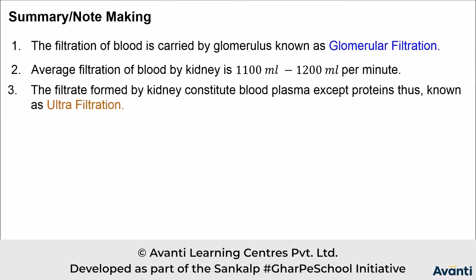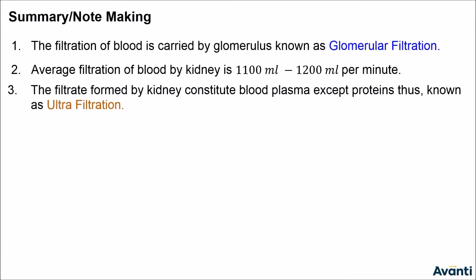Our third point is the filtrate formed by kidney constitutes blood plasma except proteins, thus known as ultrafiltration. The filtrate from the kidney is essentially blood plasma without proteins. Since filtration occurs at such a small level, we call this process ultrafiltration.